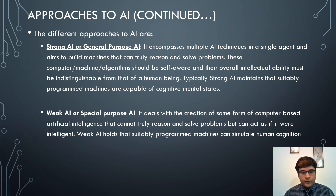The second approach is weak AI or special purpose AI. It deals with the creation of computer-based artificial intelligence that cannot truly reason and solve problems, but can act as if it were intelligent. Weak AI holds that suitably programmed machines can simulate human cognition — a weaker version of strong AI.